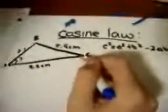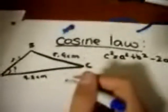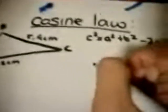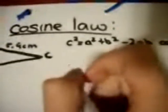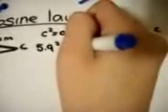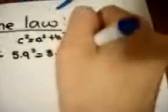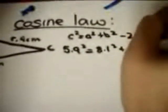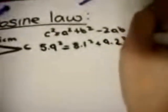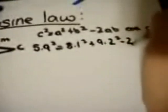We then can now start to substitute our known values into our formula. And because we have a side this time, we can change C squared or in this case A squared into 5.9 squared equals 8.1 squared plus 9.2 squared minus 2 times 8.1 times 9.2 cosine A.